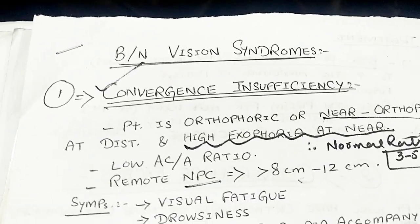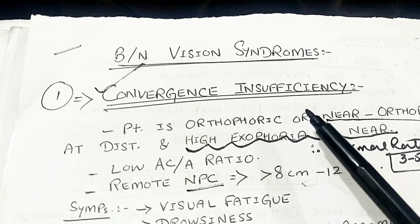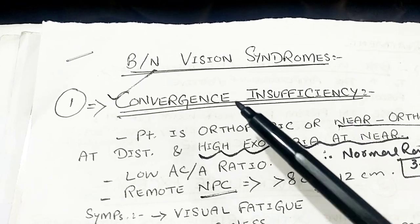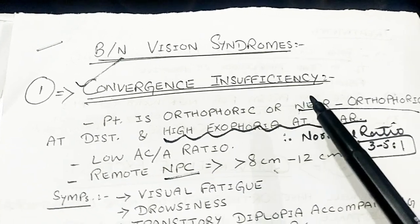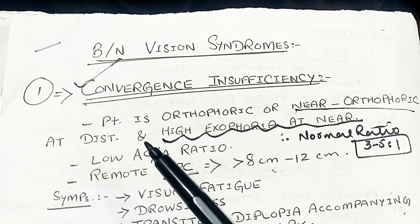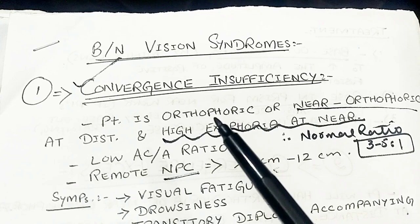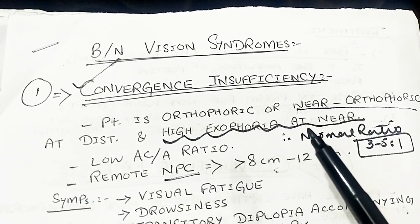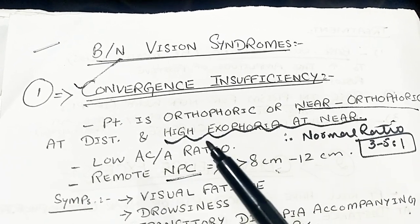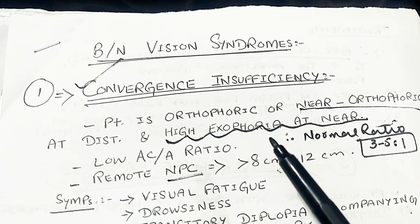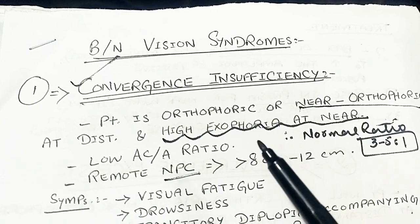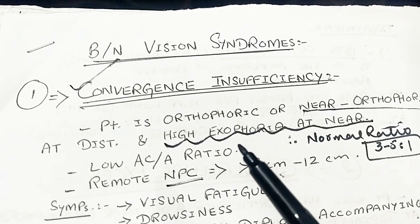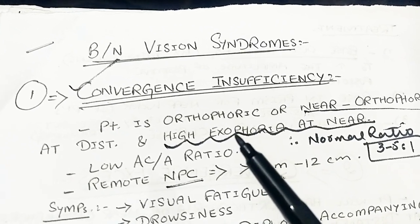As the name indicates, convergence insufficiency means the patient is unable to converge at near. So the patient is orthophoric or near orthophoric at distance — meaning the patient has straight eyes at distance — and has high exophoria at near. We find out exophoria at near by cover-uncover test and by alternate cover test.